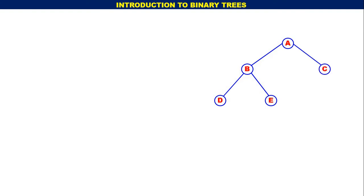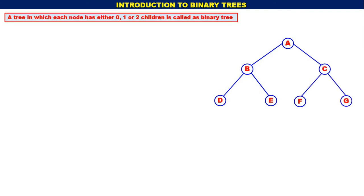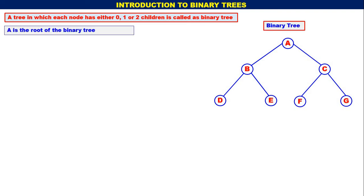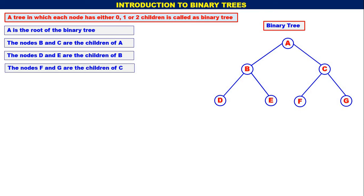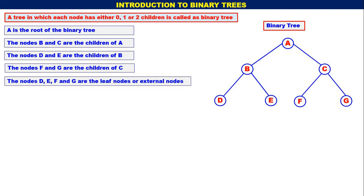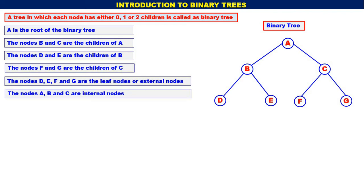A tree in which each node has either 0, 1, or 2 children is called a binary tree. A node can have 0, 1, or 2 children — it cannot have more than 2 children. A is the root of the binary tree. The nodes B and C are the children of A. The nodes D and E are the children of B. The nodes F and G are the children of C. The nodes D, E, F, and G are the leaf nodes or external nodes. The nodes A, B, and C are the internal nodes.